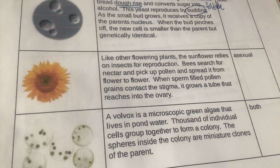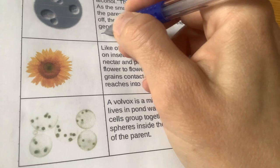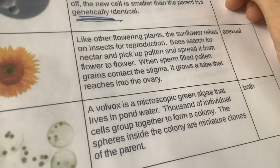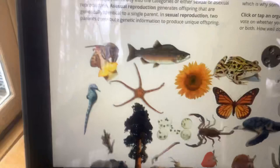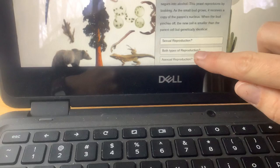Budding should be a familiar word when you made your foldable with the types of asexual reproduction — budding is one of them. As the small bud grows, it receives a copy — keyword, copy — of the parent's nucleus. When the bud pinches off, the new cell is smaller than the parent, but genetically identical. Another keyword. So if you're talking about budding, you're talking about copying, you're talking about genetically identical — this is asexual reproduction. So if you made your prediction correctly, asexual would have been the right answer.